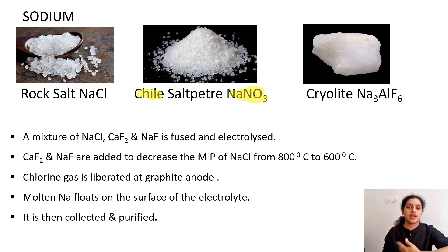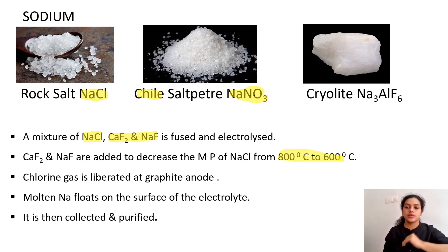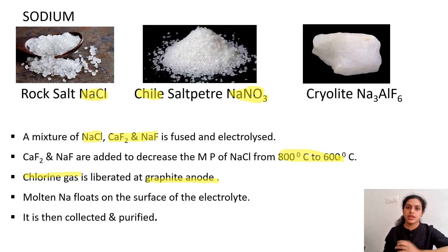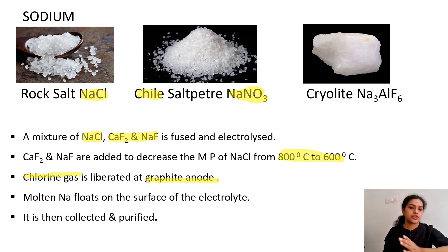For the extraction process, sodium chloride is used as it is the most abundant ore. It is mixed with calcium fluoride and sodium fluoride to reduce the melting point from 800°C to 600°C. As with lithium, chlorine gas is a valuable byproduct liberated at the graphite anode, and Na⁺ is reduced to sodium metal at the steel cathode. The molten sodium metal floats on the surface, is collected and purified.